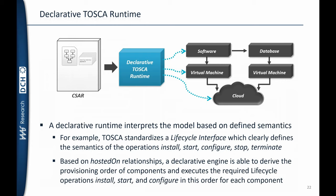For example, it derives that the virtual machine has to be running before the software component can be installed — so the VM is installed, then configured, then the software is installed and configured. After the second virtual machine and database have been installed and configured correctly, the software can connect to the database. However, a declarative TOSCA runtime may deploy an application differently for each execution, since the order in which steps are executed is derived by the runtime.